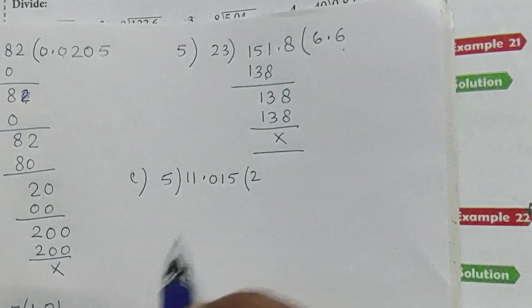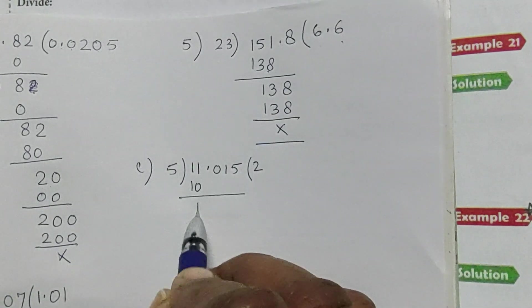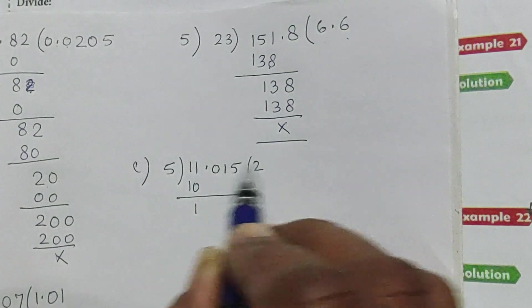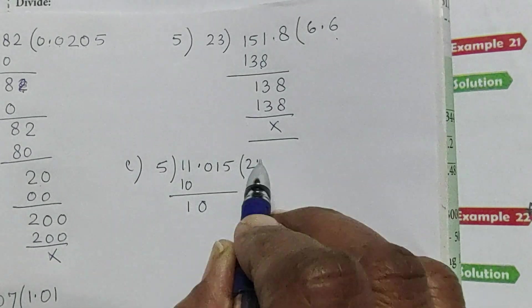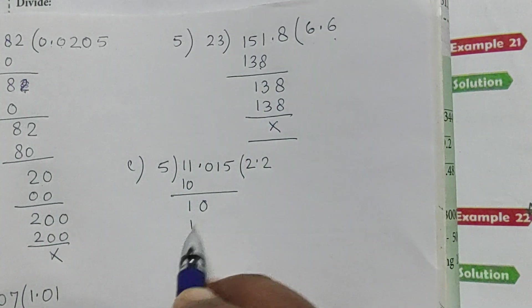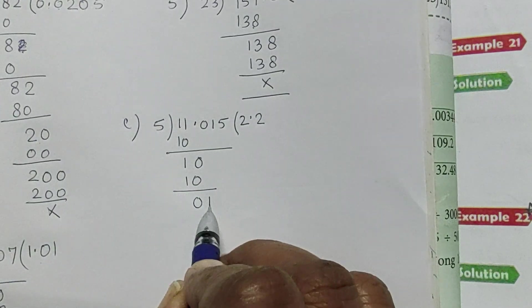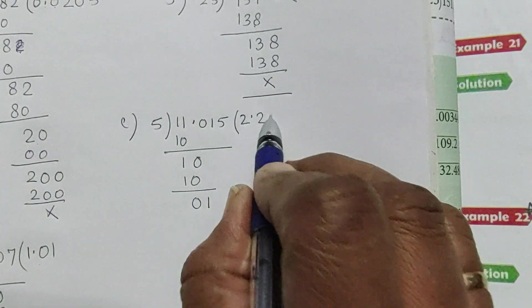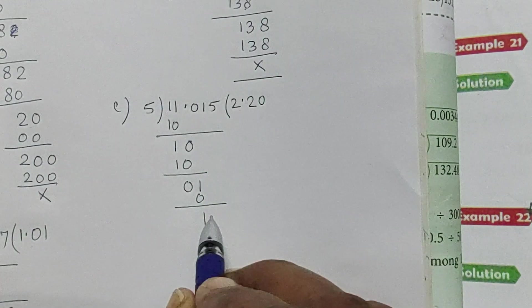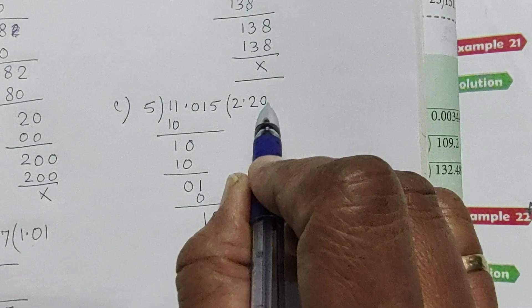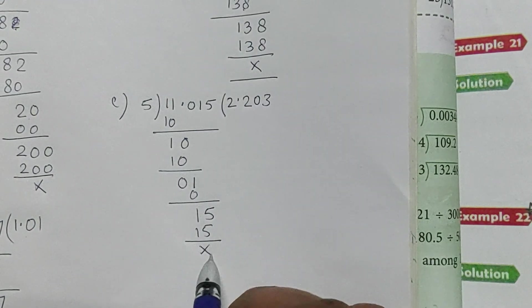5 into 2 is 10. 11 minus 10 is 1. Then we bring down the zero. 5 into 2 is 10, 10 minus 10 is 0. Bring down 1, it won't divide, so we put 0 to complete the step. Then bring down 5, and 5 into 3 is 15. The division is complete.